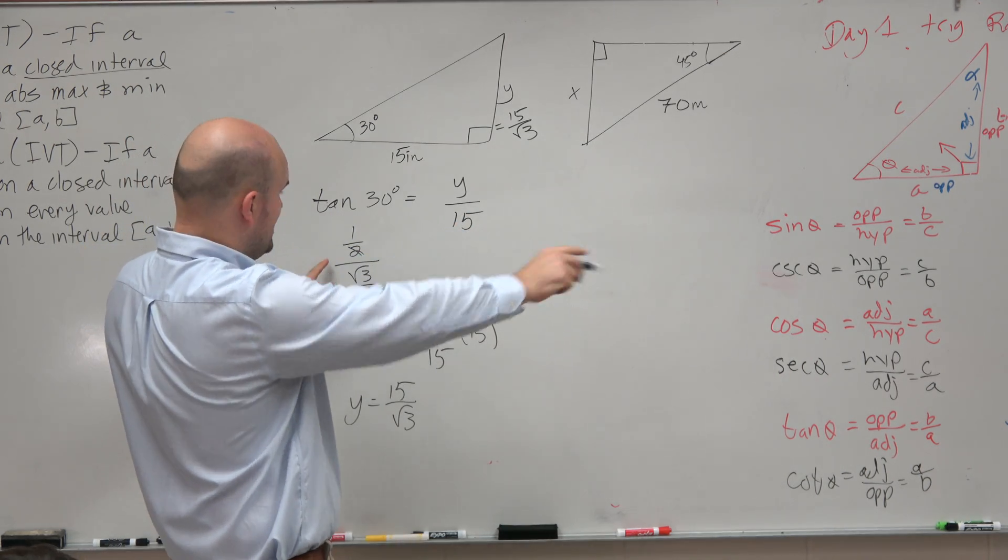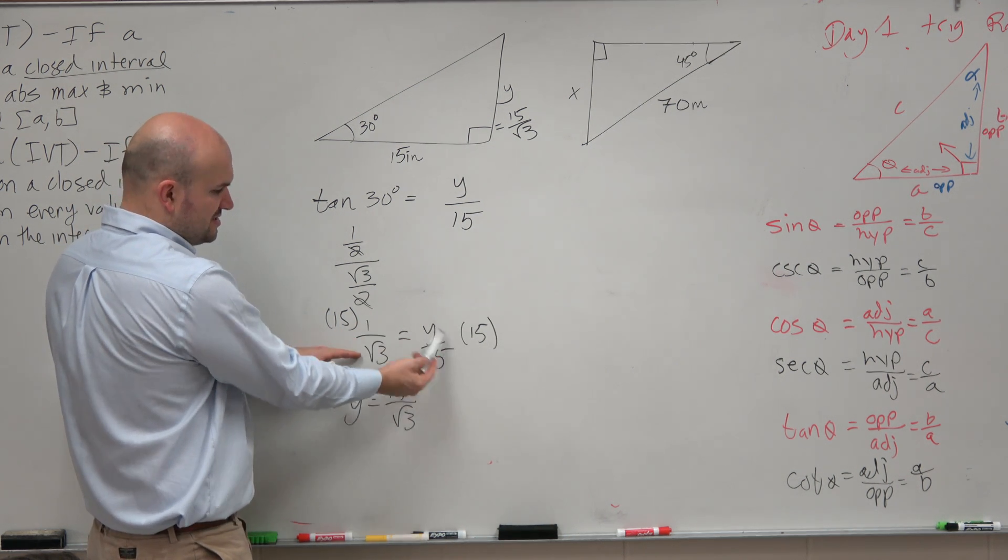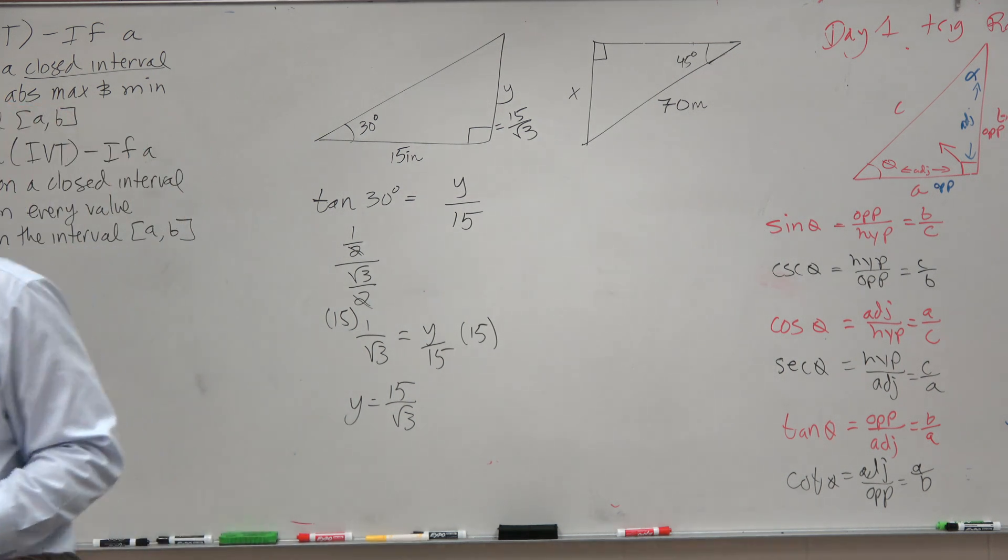But if you look at that special right triangle, you guys can rewrite tangent of 30 degrees as 1 over the square root of 3, and then just multiply by 15, you get the exact same answer. So you don't have to have the special right triangles memorized.